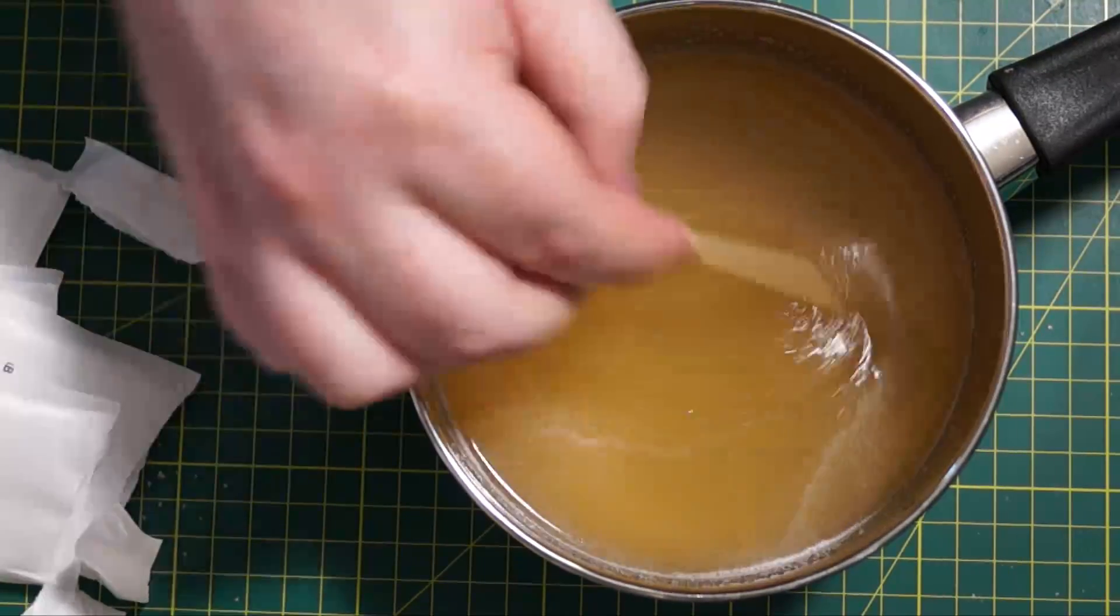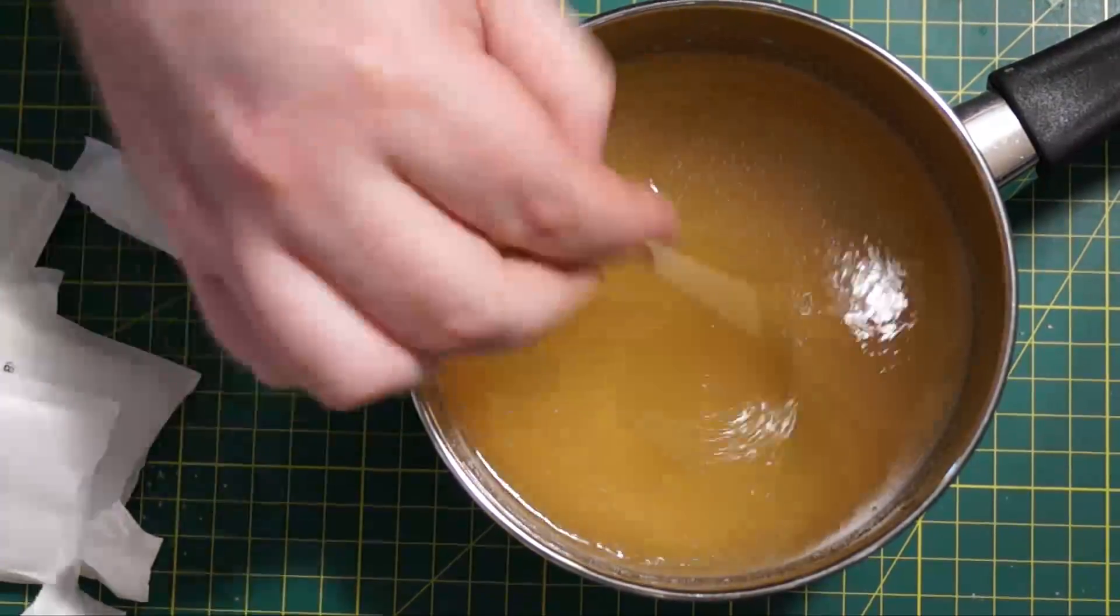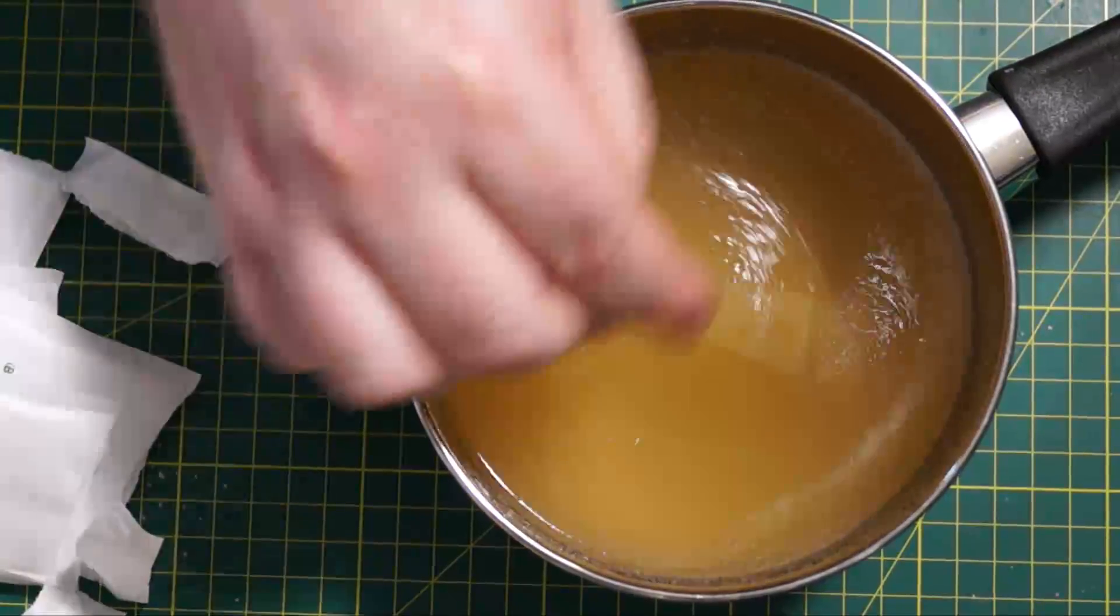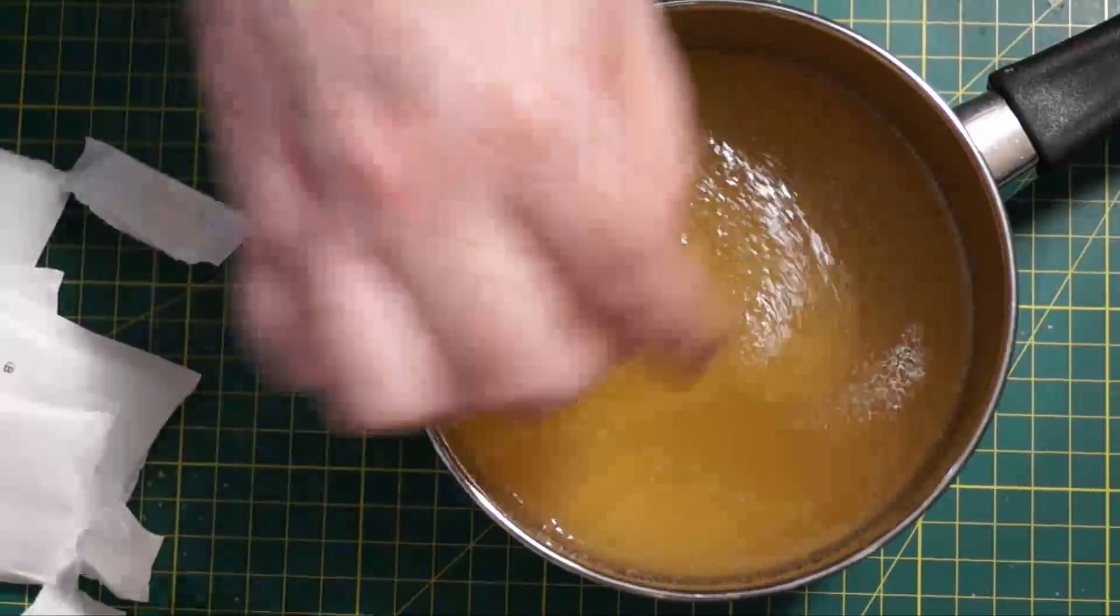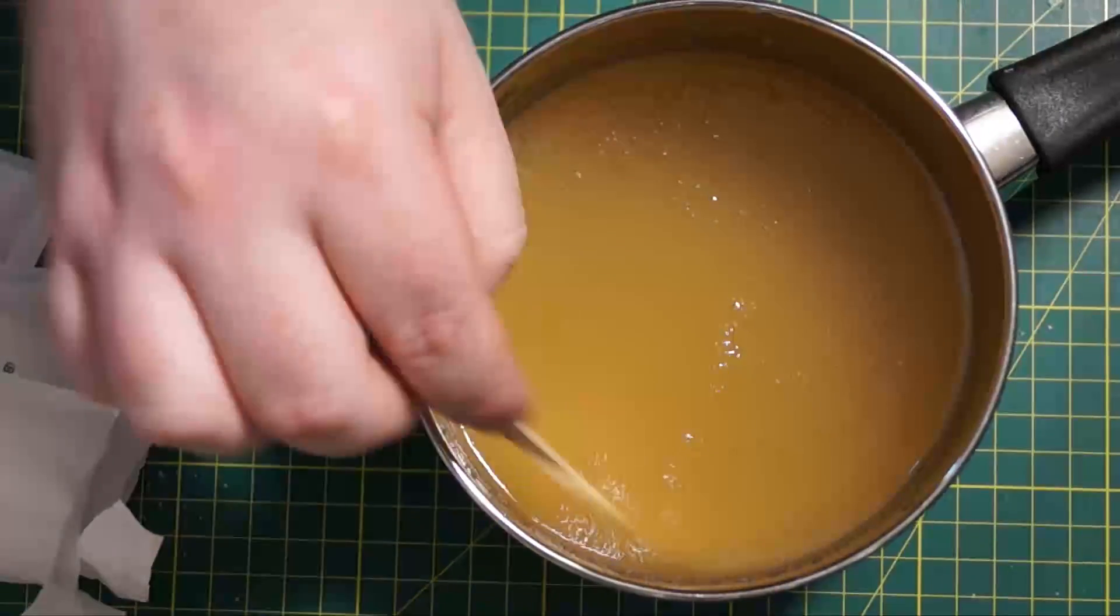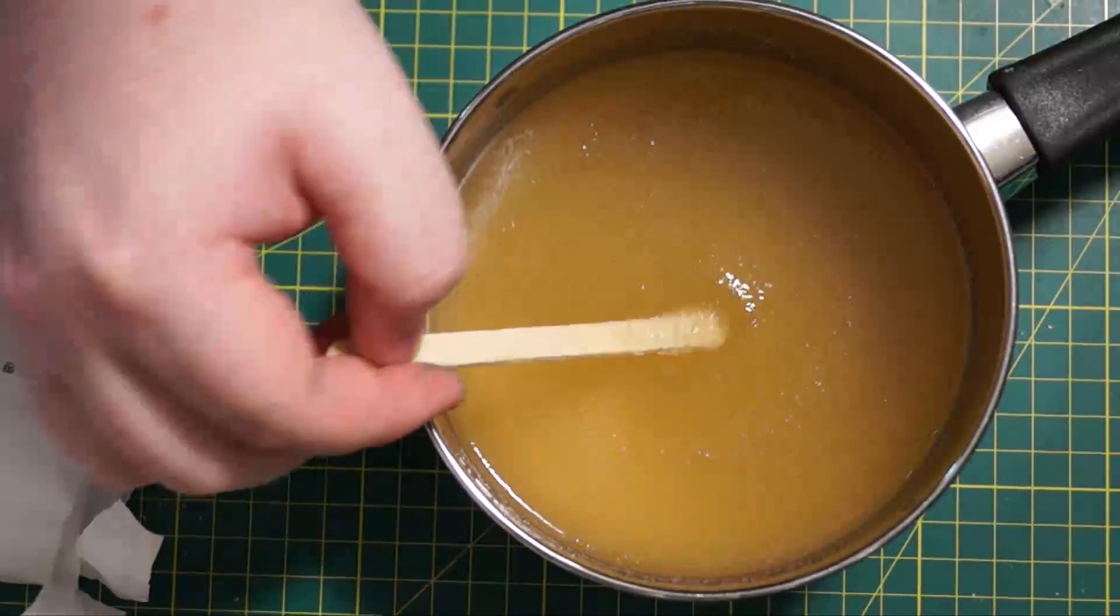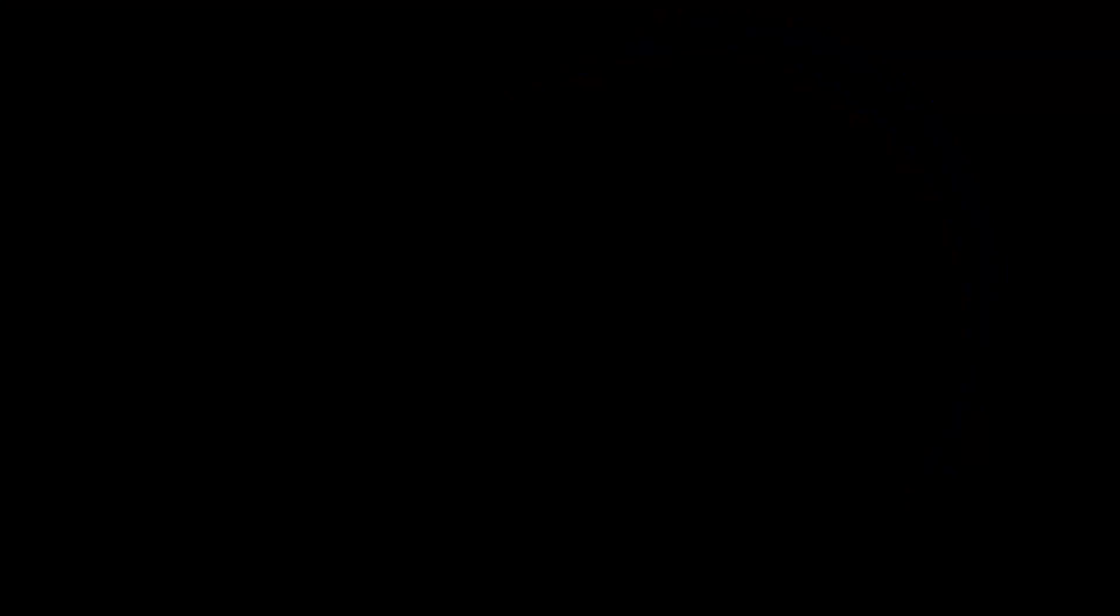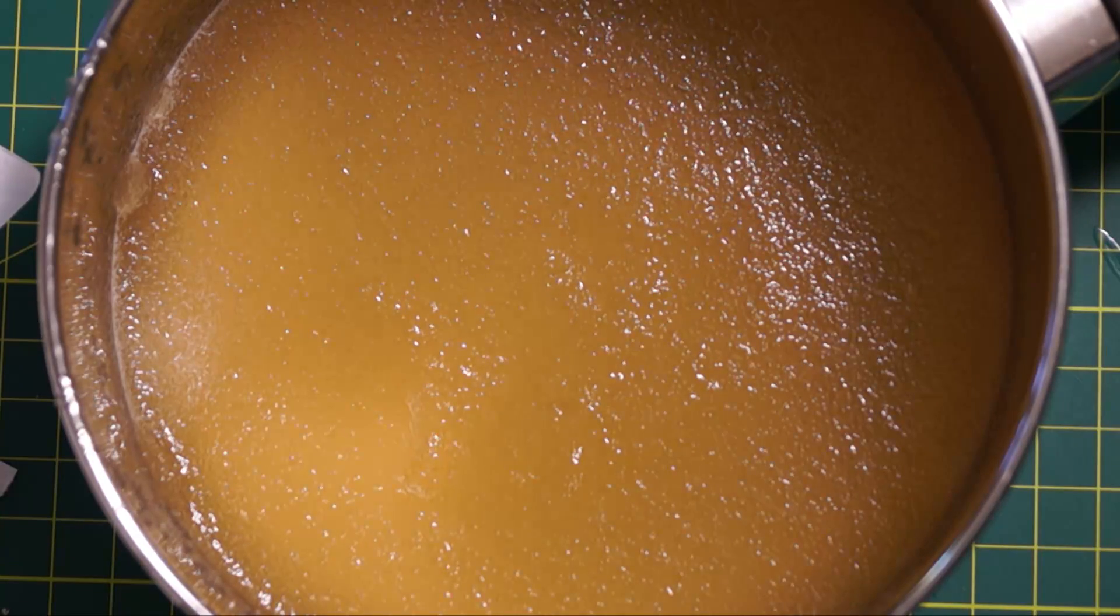So you need to just keep stirring this for several minutes. So this could take up to 10-15 minutes to do. It depends on how the reaction is going, relative humidity, etc. And it's going to become like a thick soupy sludge. So you can see here there's quite a bit sticking to the popsicle stick.